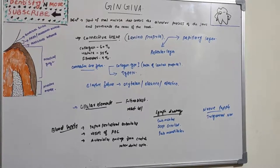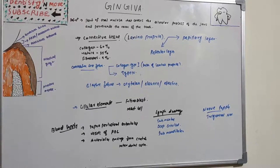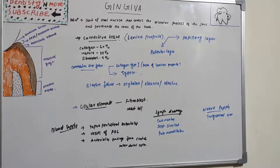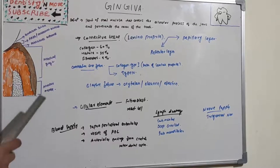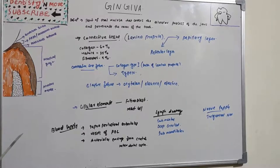Connective tissue has cellular and extracellular compartments composed of fibers and ground substance. Ground substance is basically composed of proteoglycans, hyaluronic acid, chondroitin sulfate, and glycoproteins, mainly fibronectin. Fibronectin binds fibroblasts to the fibers and mediates cell adhesion and migration. Laminin is another glycoprotein that attaches to epithelial cells.